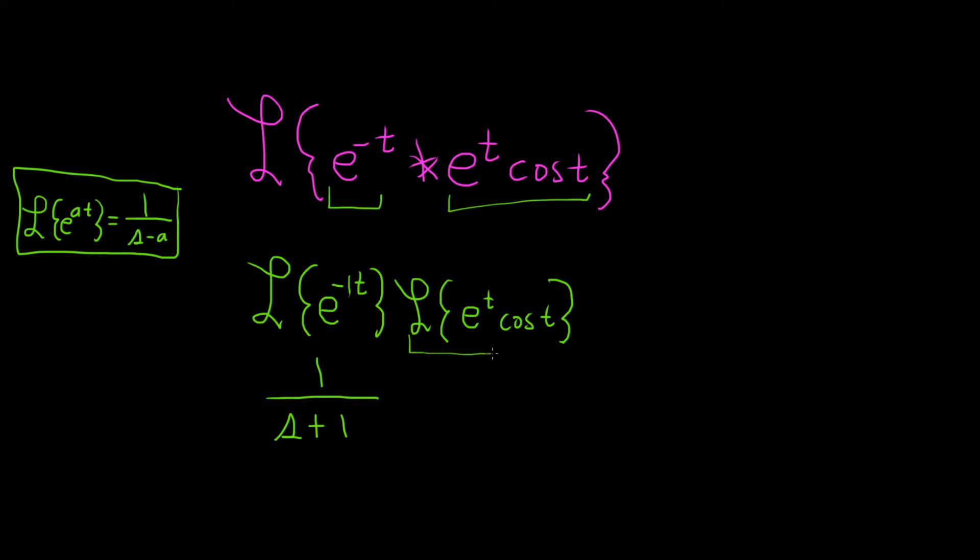For this next piece we have to use the first translation theorem. The first translation theorem says if you have e to the at times f of t and you're trying to find the Laplace transform, you can drop the exponential function and write this as the Laplace transform of f of t. Then you replace the exponential function with a shift, going from s to s minus a.